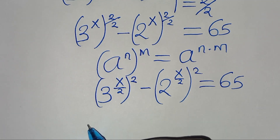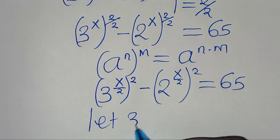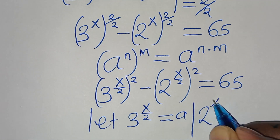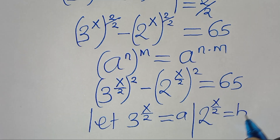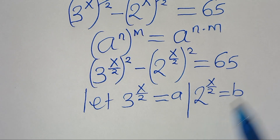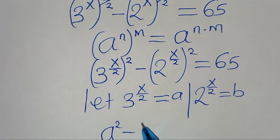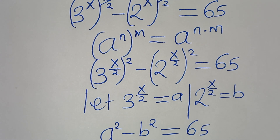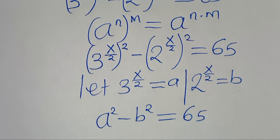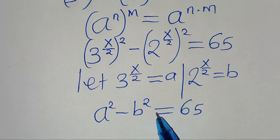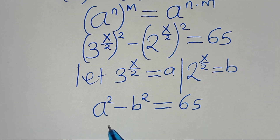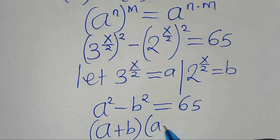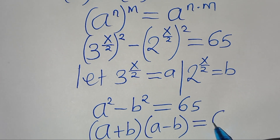We let 3 to the power of x over 2 equal to a, and 2 to the power of x over 2 equal to b. Substituting a and b, we have a squared minus b squared equal to 65. This is the difference of two perfect squares that we can express as a plus b multiplied by a minus b, equal to 65.